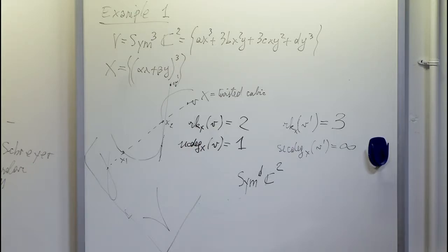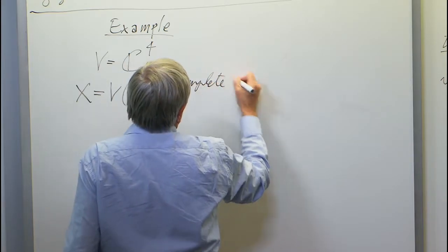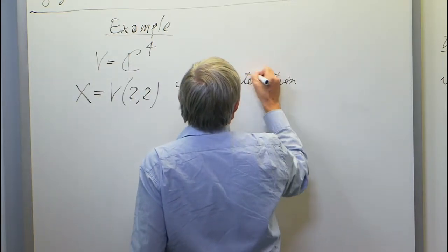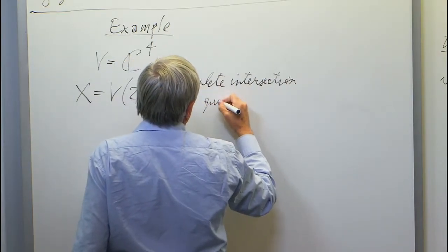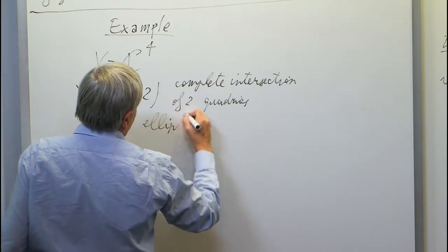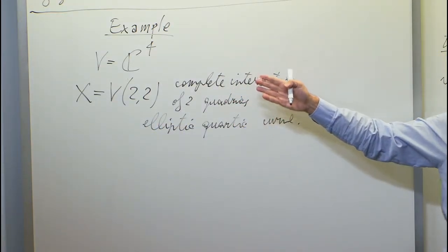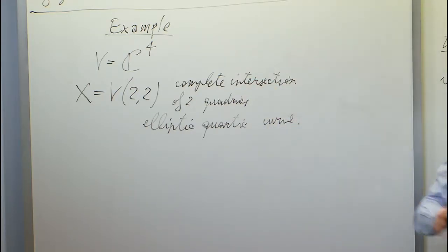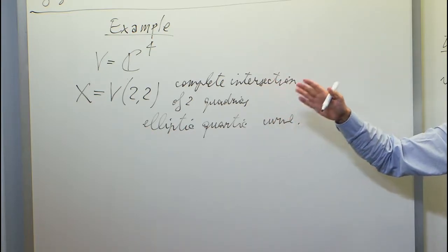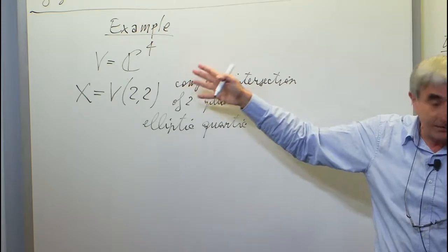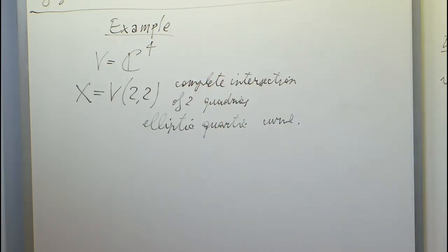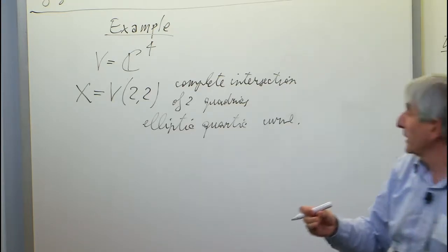The last example: take a four-dimensional vector space, so we work in projective space, and X is V(2,2) — the complete intersection of two quadrics. This is an elliptic quartic curve. At first glance you might think this has nothing to do with tensors, but I will show at the end of the talk that this example comes very naturally in a tensor space when doing tensor decomposition.